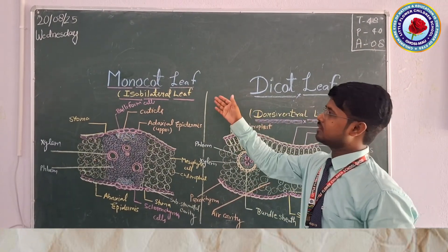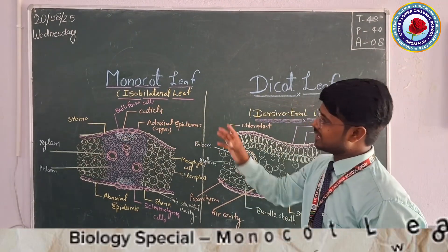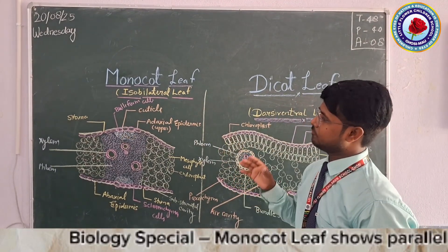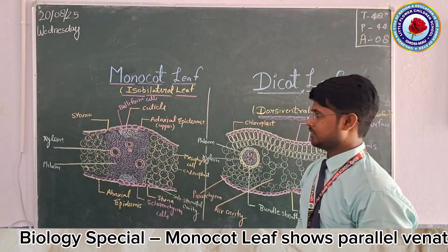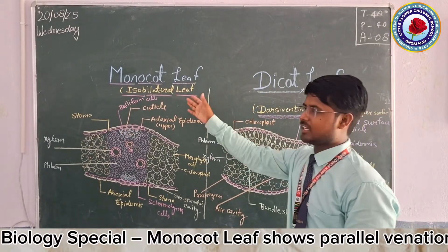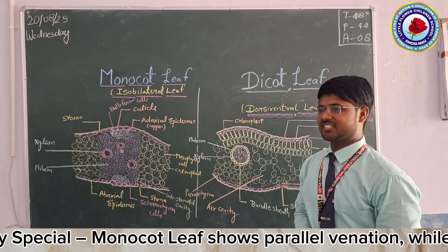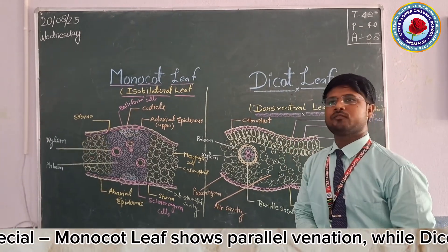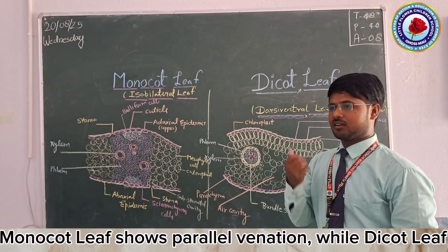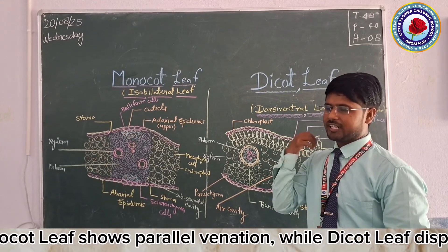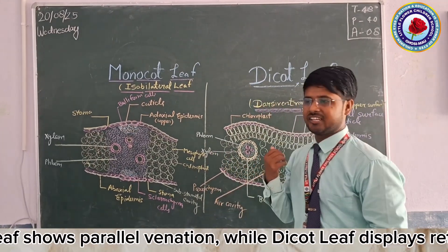Our next part is the monocot leaf. In the monocot leaf there is a special structure known as bulliform cells. At conditions of water stress, the bulliform cells cause this leaf to curl down, which prevents water loss by curling the leaf.